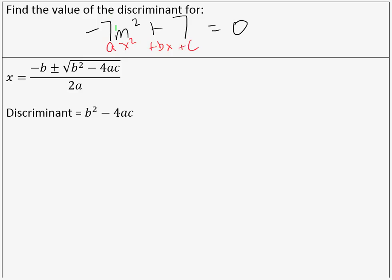For this example, we have an x squared term. We also have a c term, but we do not have a b term. Any time you are missing a term, that means that term is 0, so b equals 0. We can see that a equals negative 7 and c equals 7.